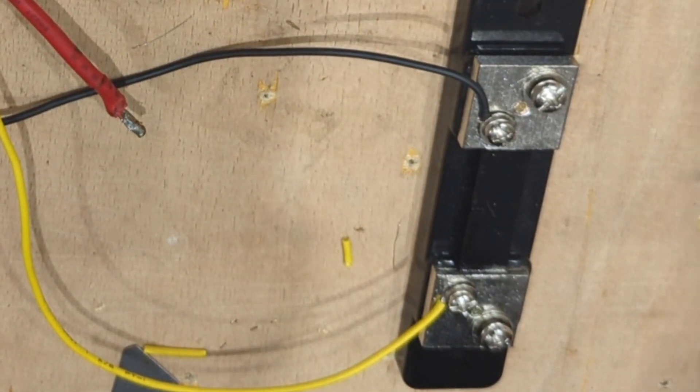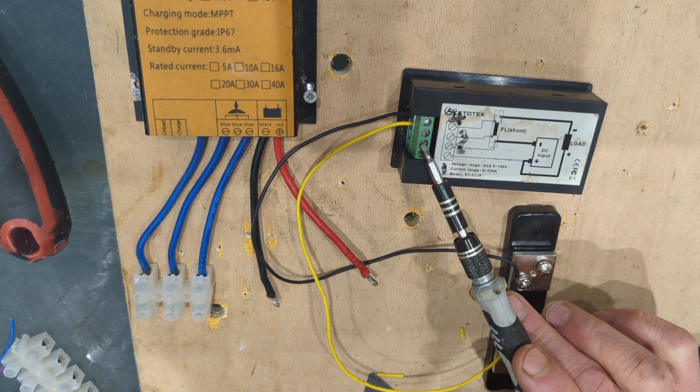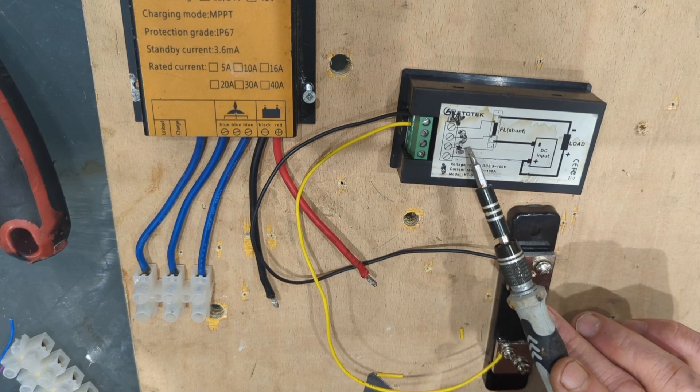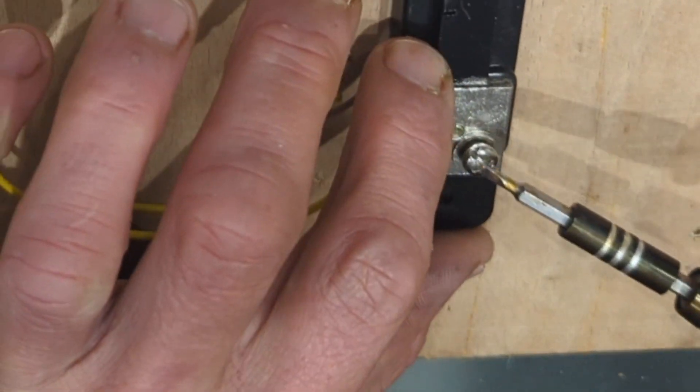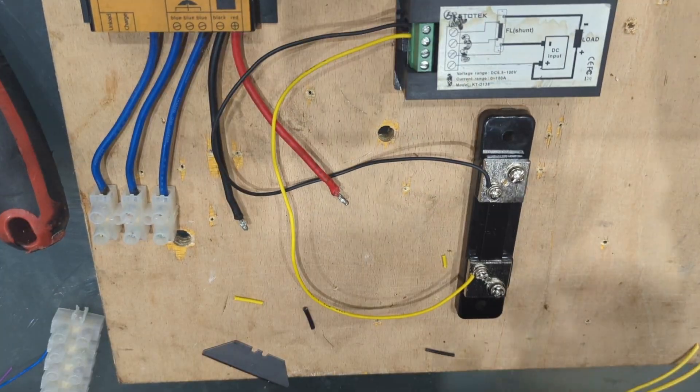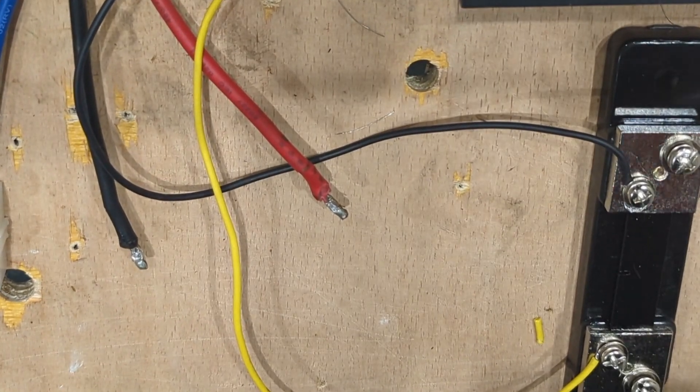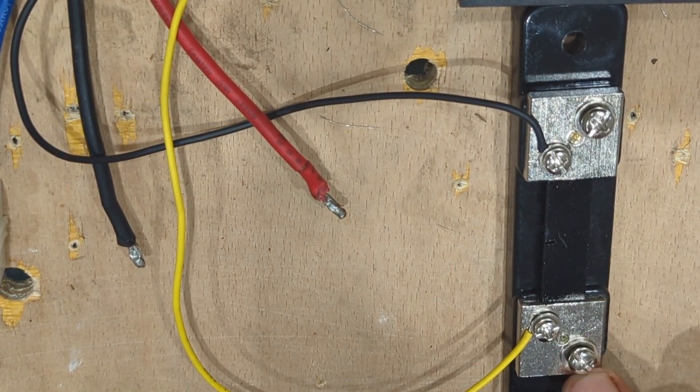That's the easy ones done. Now we have this one which has to go from here to this one on the bottom edge of the shunt. So let's do that. I'm gonna use a thicker wire for that.